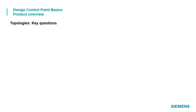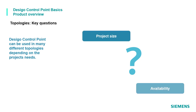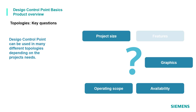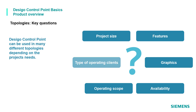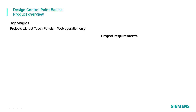DCGO Control Point can be used in many different topologies depending on the project's needs. Key questions to determine the proper topology are: project size, availability, operating scope, graphics features, and type of operating clients. In the following pages, examples of the most common topologies are shown.